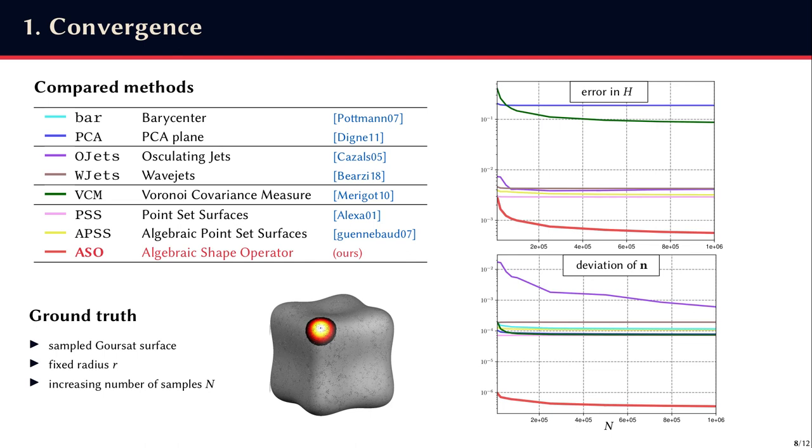So we obtain these two logarithmic plots, one for the error on the mean curvature and one for the error on the normal vectors, and they demonstrate that our algebraic shape operator, in red, has the lowest errors for any number of samples.